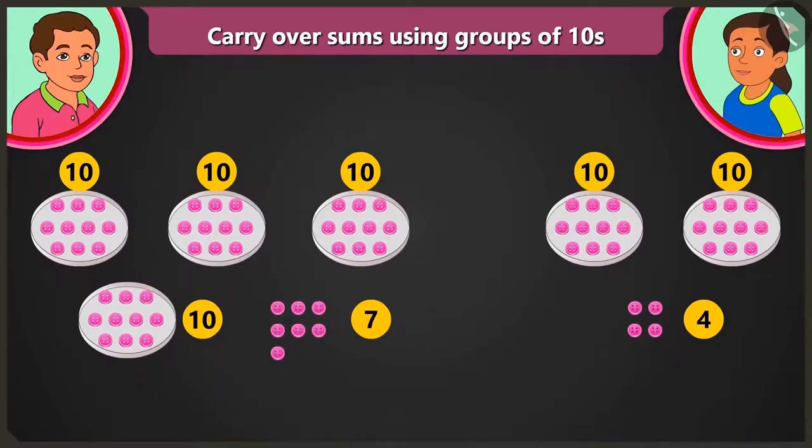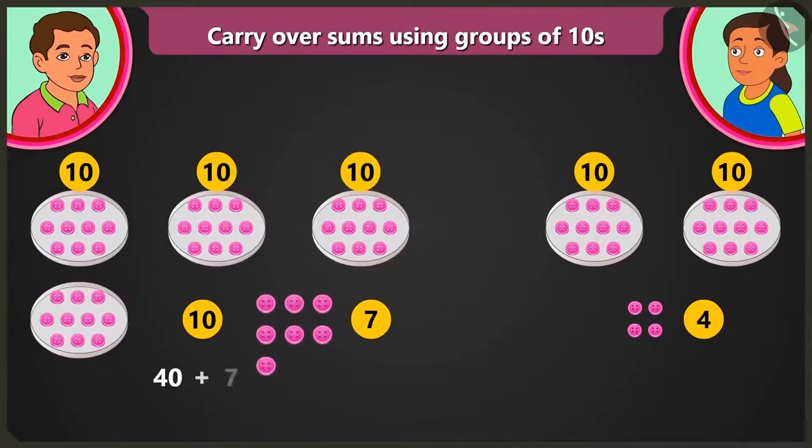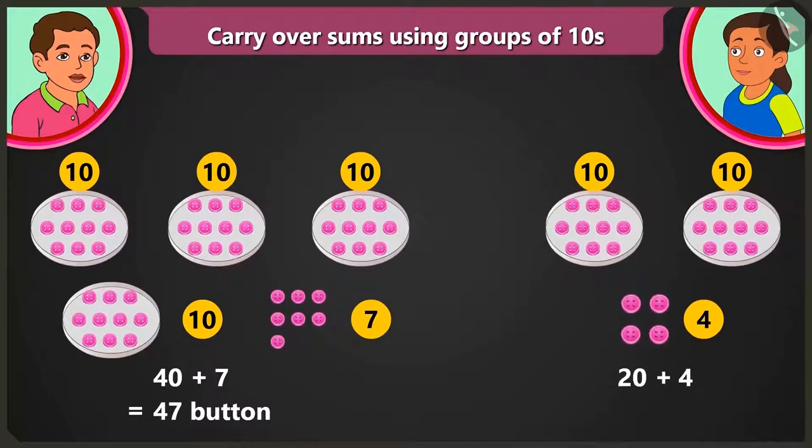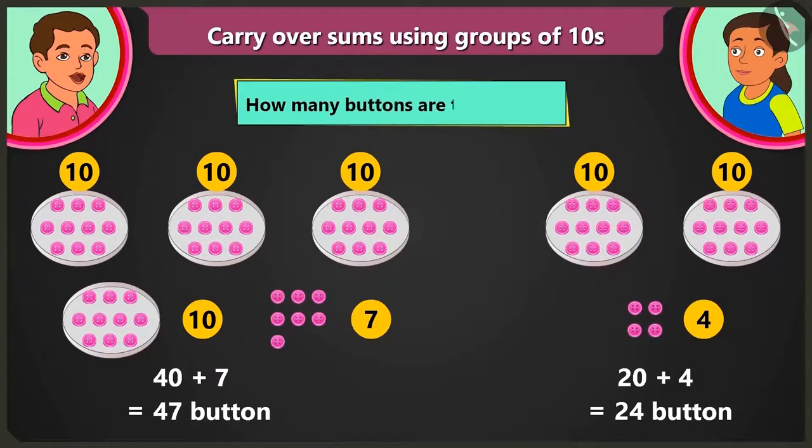Look bubbly, there are 40 and 7, 47 pink buttons and 20 and 4, 24 red buttons. So tell me, how many buttons are there in total?